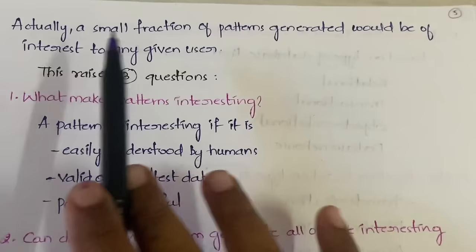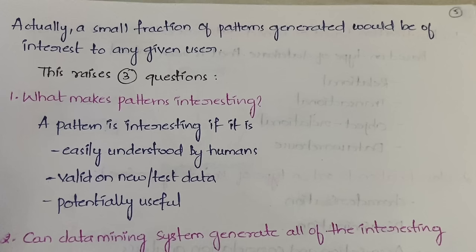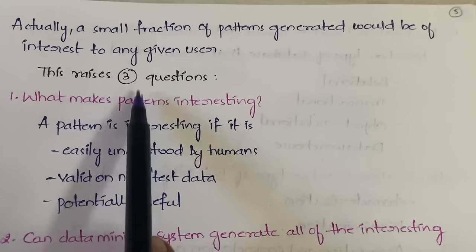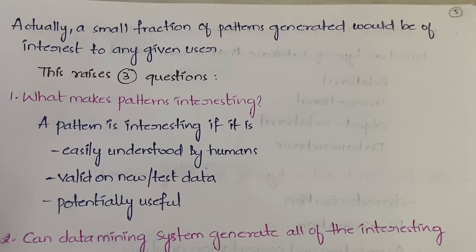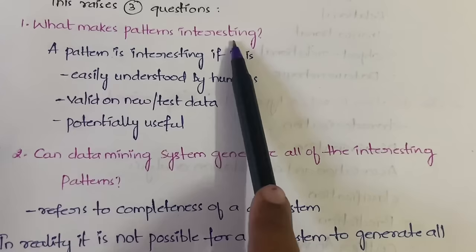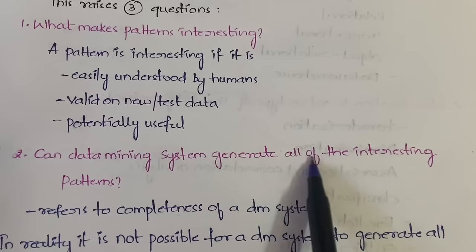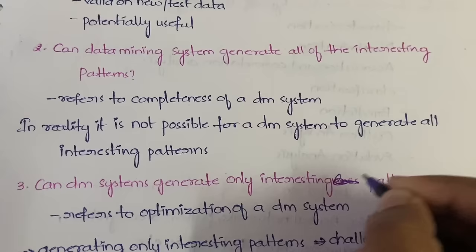A small fraction of patterns generated would be really of interest to a given user. Among millions of patterns generated by the system, only a small fraction will be obviously useful. This raises three questions. If you're asked about this in an exam, write these three questions and their answers: first, what makes a pattern interesting; second, can a data mining system generate all of the interesting patterns; and third, can a data mining system generate only interesting patterns.